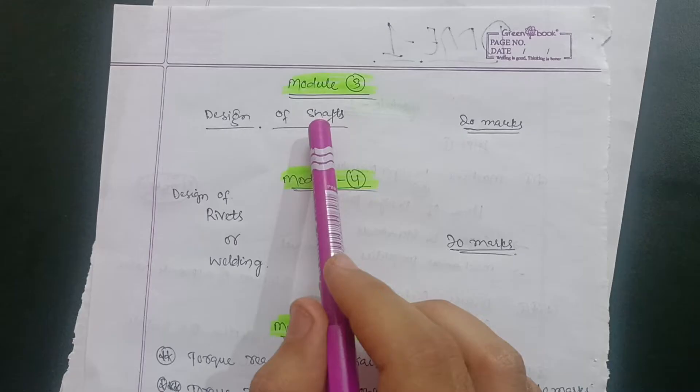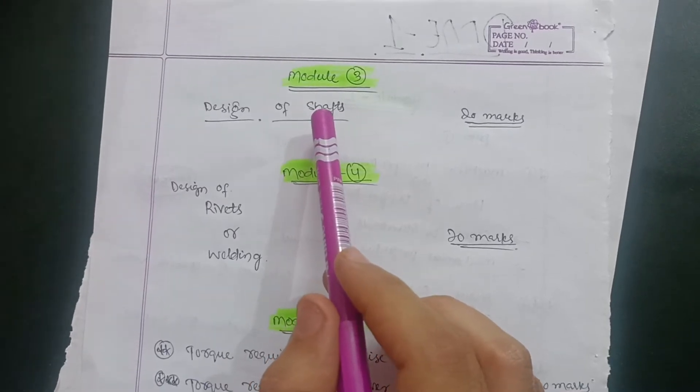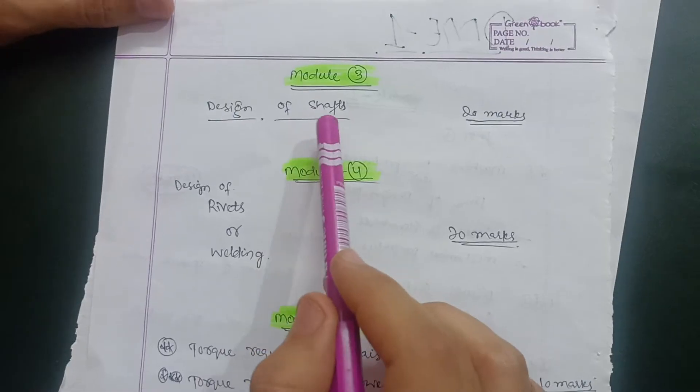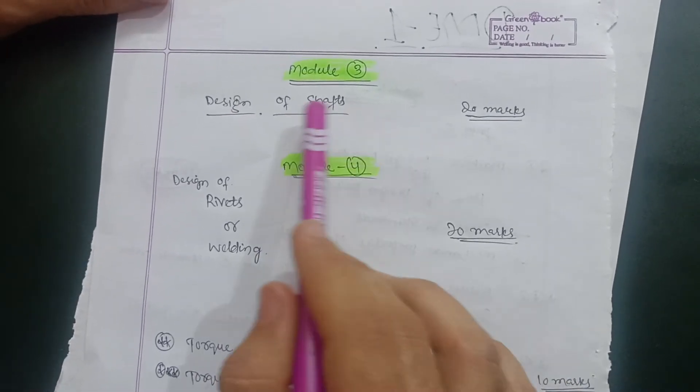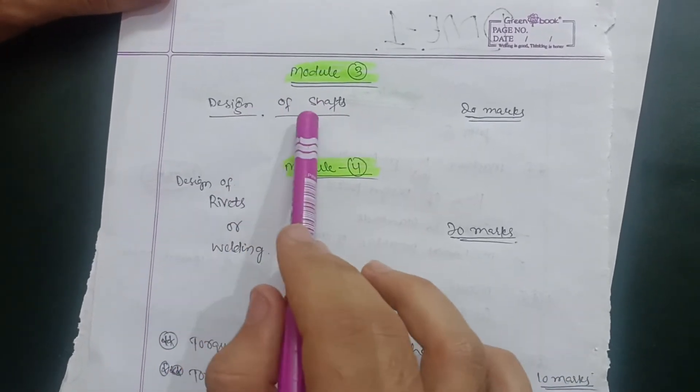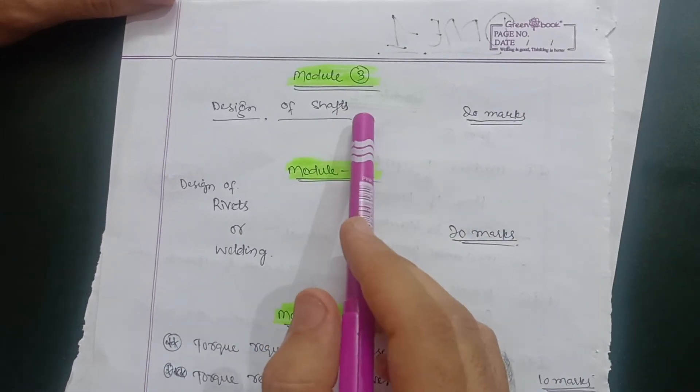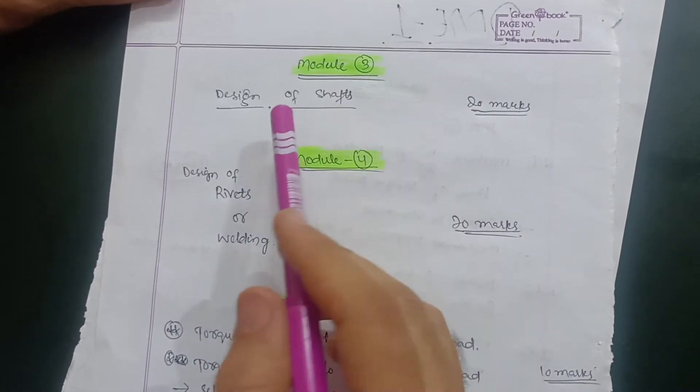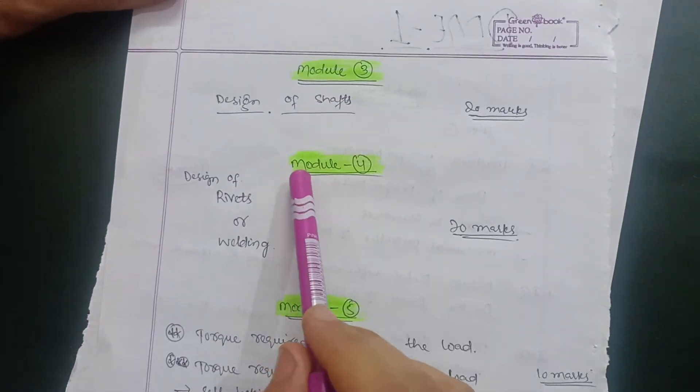Driven and driver - if you are able to recognize, if you are able to figure out the driven and driver, then it becomes very easy problem to find the diameter of the shafts. Go through this design of shafts. If you are able to conquer it, if you are able to understand it, then go for it. If not, then leave this module.